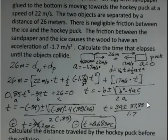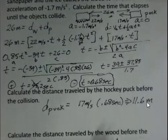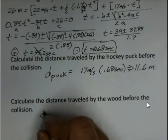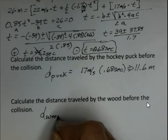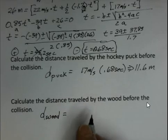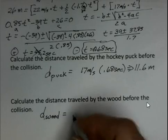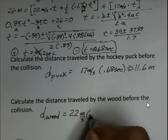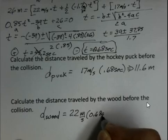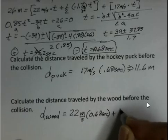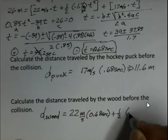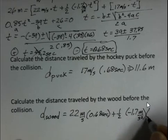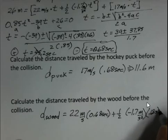What's the distance traveled by the wood? Slide this up further. The distance traveled by the wood, using what I would call the third kinematic equation, is the initial velocity, 22 meters per second, times 0.68 seconds, plus one-half the acceleration, -1.7 meters per second squared, and this 0.68 seconds squared.